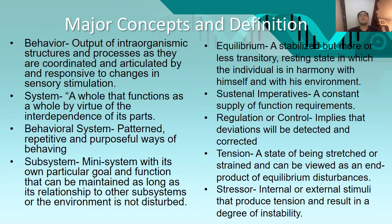Major Concepts and Definitions. First, Behavior: output of intraorganismic structures and processes as they are coordinated and articulated by and responsive to changes in sensory stimulation. System: a whole that functions as a whole by virtue of the interdependence of its parts. Behavioral System: patterned, repetitive, and purposeful ways of behaving. Subsystem: a system with its own particular goal and function that can be maintained as long as its relationship to other subsystems or the environment is not disturbed. Equilibrium: a stabilized but more or less transitory state in which the individual is in harmony with himself and with his environment.